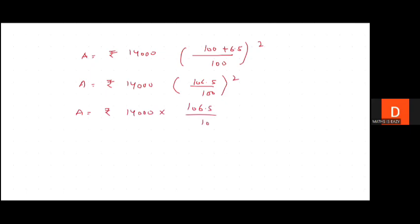So it's 14,000 times (1 + 6.5/100)^2. Next step: Amount = rupees 14,000 × (100 + 6.5)/100 raised to the power 2. So amount would be rupees 14,000 × 106.5/100 × 106.5/100.